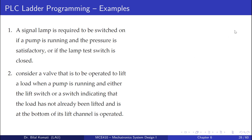A signal lamp is required to be switched on if a pump is running and the pressure is satisfactory, or if the lamp test switch is closed. We have some logic actions here — the signal lamp has two conditions with an OR: the pump running AND pressure satisfactory, or the lamp test switch closed.